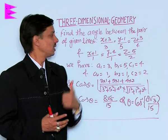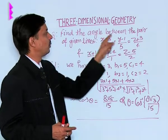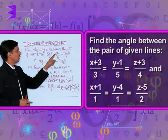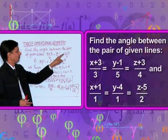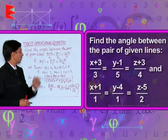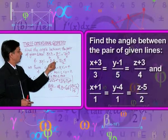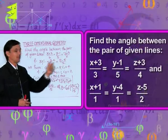Here, the question is find the angle between the pair of lines. First line given by (x+3)/3, (y-1)/5, (z+3)/4, and the second line is (x+1)/1, (y-4)/1, (z-5)/2.